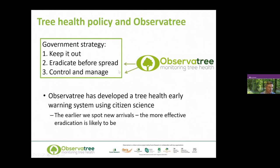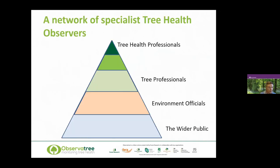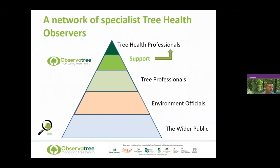Observatory was set up really as a proof of concept — could a volunteer network be trained up to help look for, report and monitor tree pests and diseases? It was intended to help government officials eradicate pests and diseases before they become established and spread, and increasingly Observatory volunteers are also supporting further control and management. There have been other citizen science projects in the past in the UK focused on wider public engagement, but often what happens is a large media campaign raises awareness, there's a big flurry of activity, and then that drops off quite rapidly. Observatory is quite different.